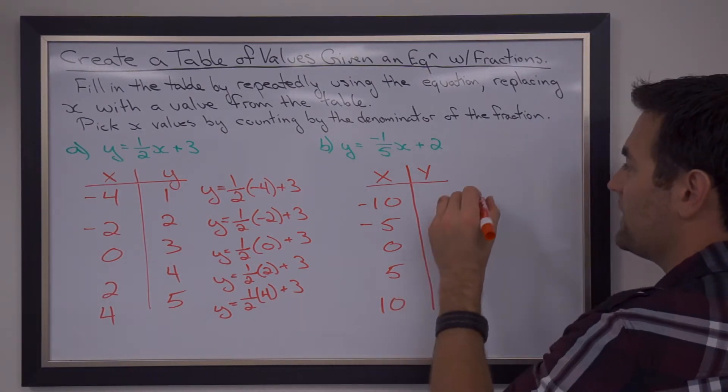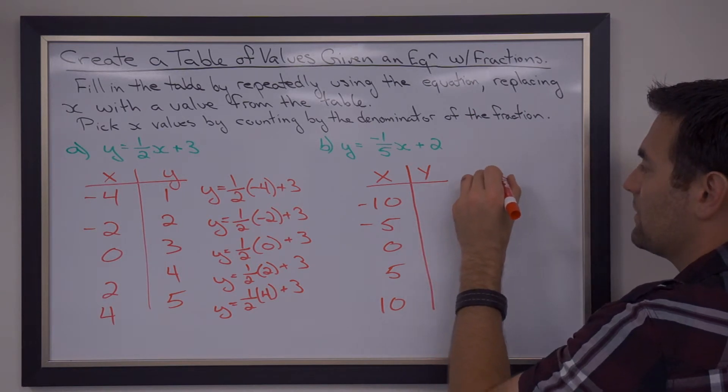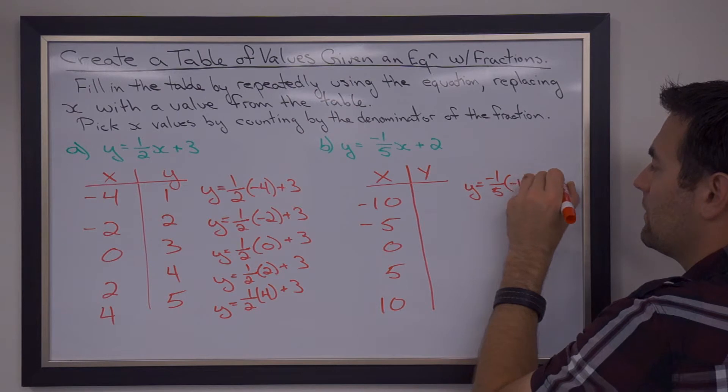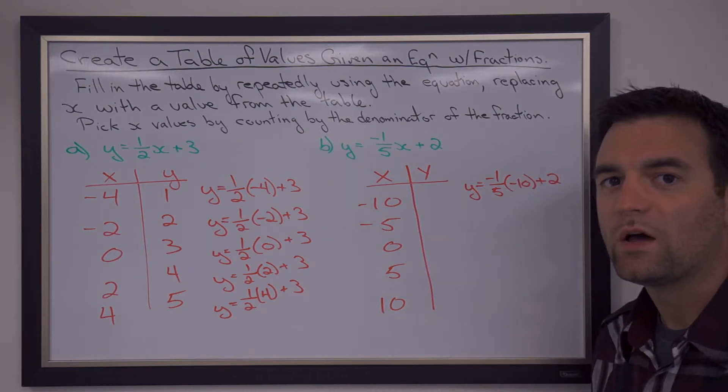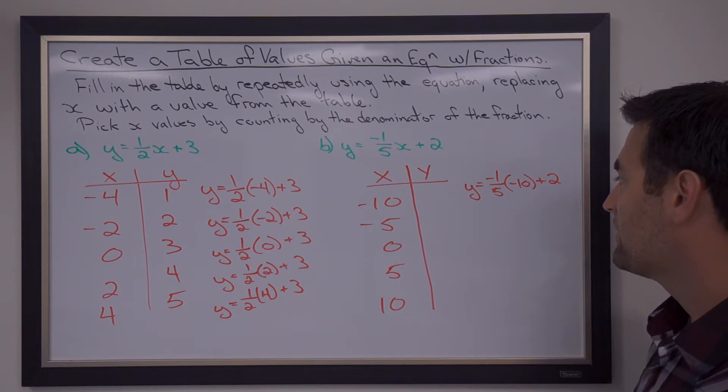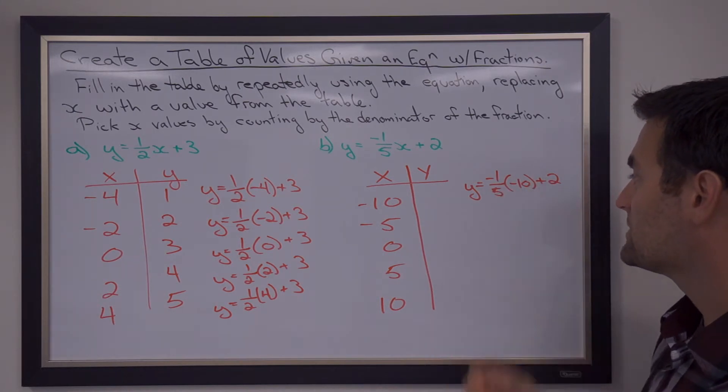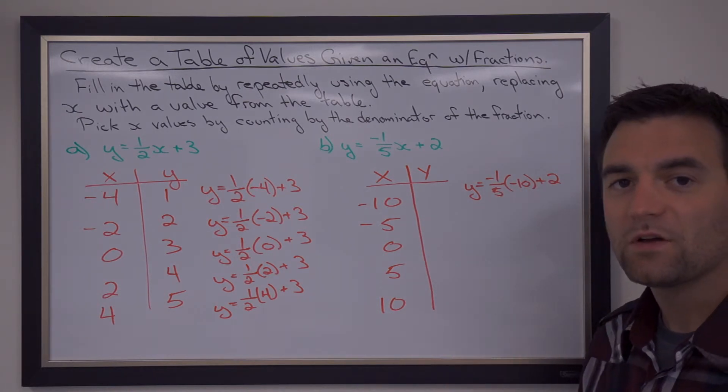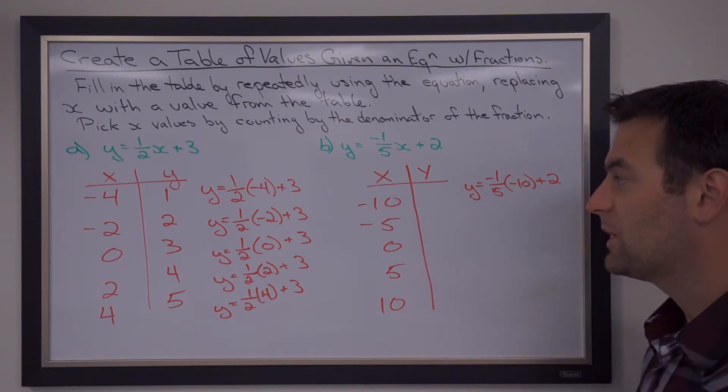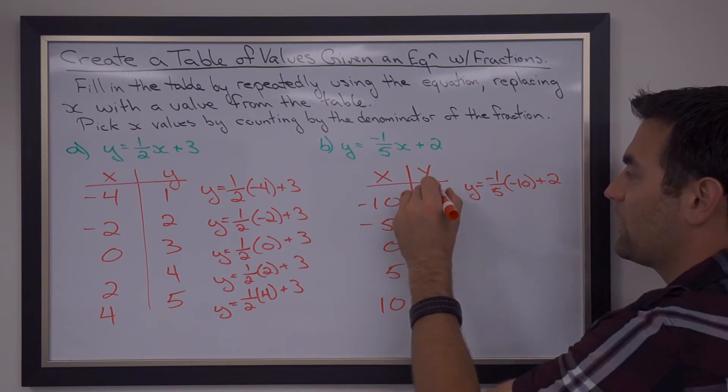And then we sub those values into the equation to calculate the y-values. In this case, we'll have negative 1 times negative 10 divided by 5. So we'll have 1 fifth of 10, that's going to be negative 2. It becomes positive, so positive 2 plus 2 is 4.